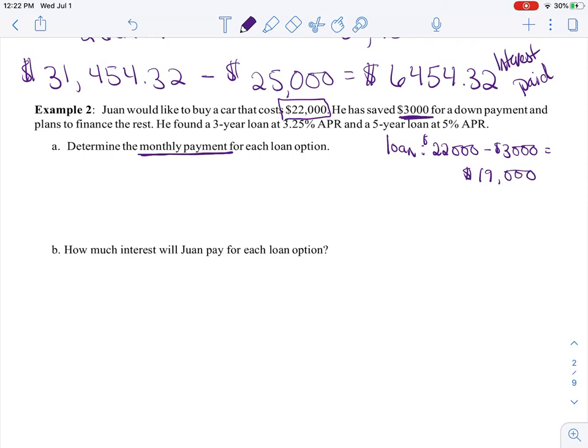So determine the monthly payment - here's the keyword, we want to go ahead and use the payment function. If I finish reading this, it says he found a three-year loan for 3.25% APR and a five-year loan at 5% APR. So we're going to determine how much our monthly payment would be for each of these. For the three year, it would be equals payment, our rate...